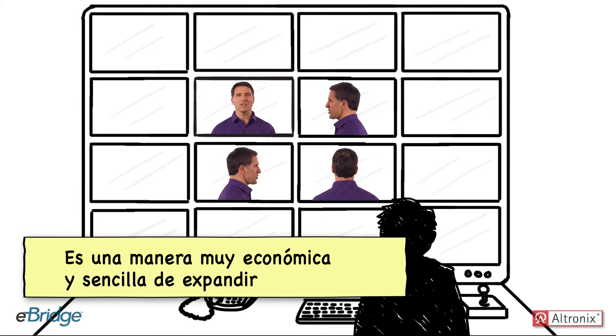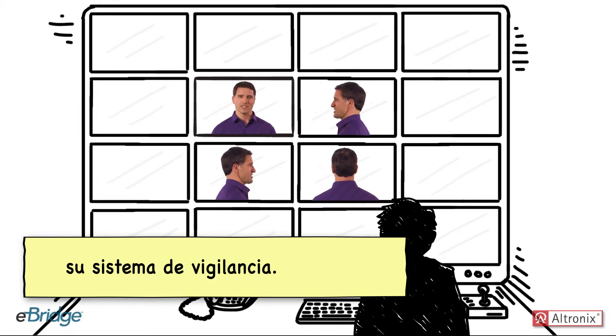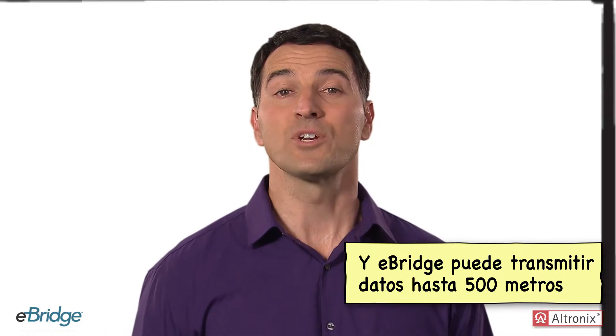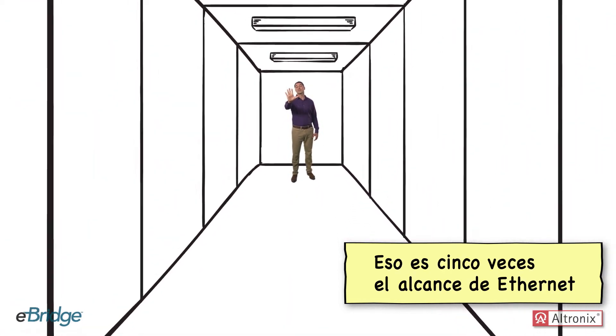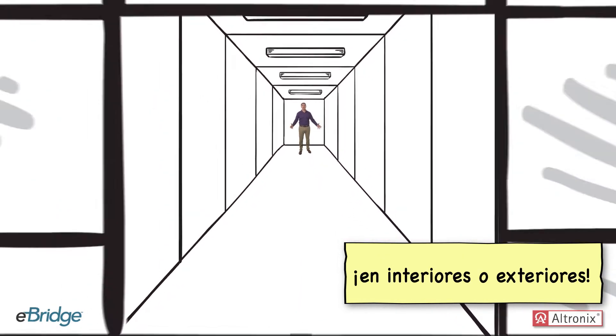It's an extremely cost-efficient and simple way to expand your surveillance system. eBridge can transmit data up to 500 meters without using repeaters. That's 5 times Ethernet range, indoors or out.